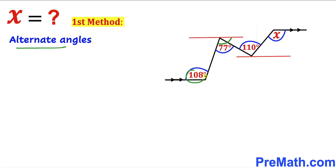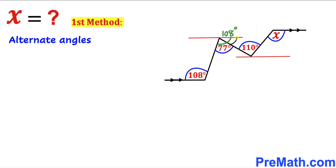If this angle is 108 degrees, then this angle is going to be 108 degrees as well. Now we can see that this whole angle is 108 degrees and this angle is 77 degrees, so this angle is going to be the difference: 108 minus 77 degrees. This angle turns out to be 31 degrees.